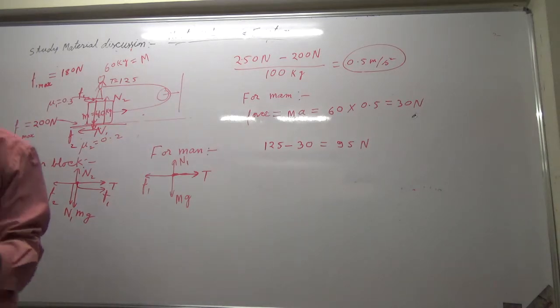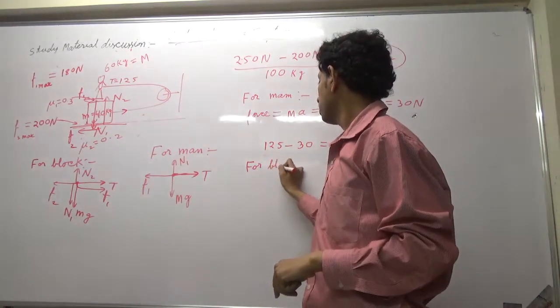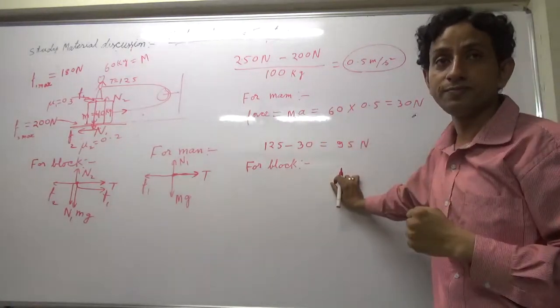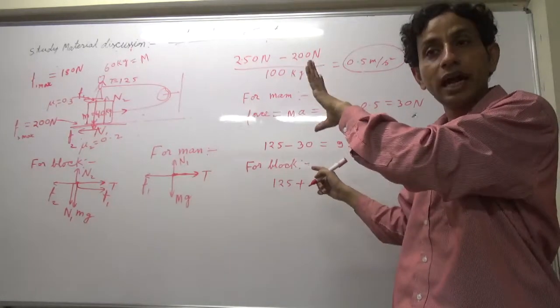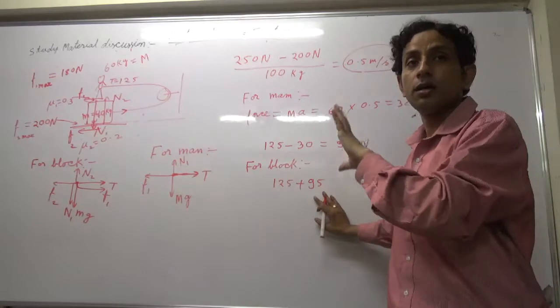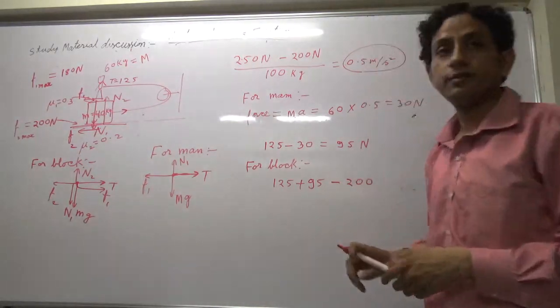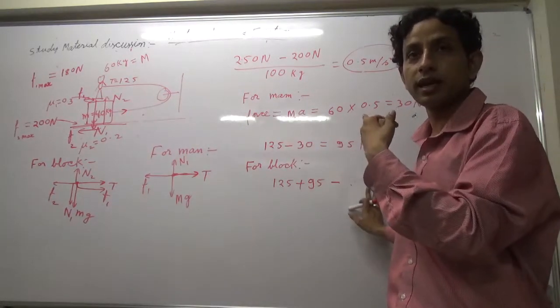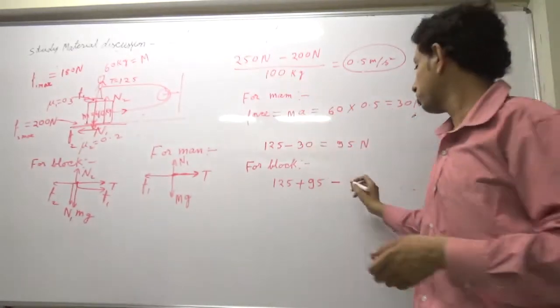Now for block. Block will also move. Man and block are moving together. Block has forces: 125 plus 95, this 95 friction acts forward on block, minus 200, the friction from ground. 220 minus 200 is 20, divided by mass of block 40, that is 0.5. Match! They will move together with this acceleration. It means the block and man will move together.